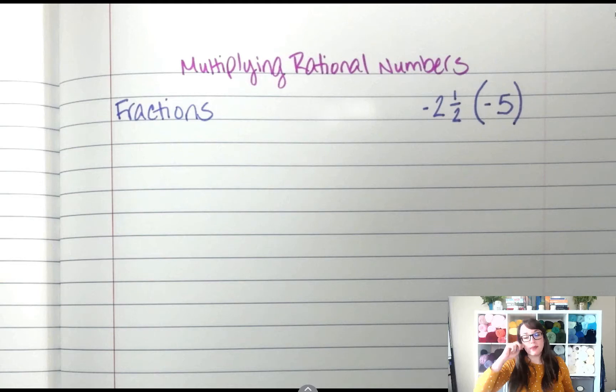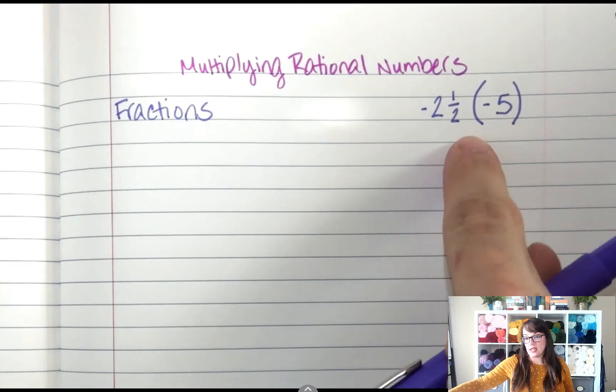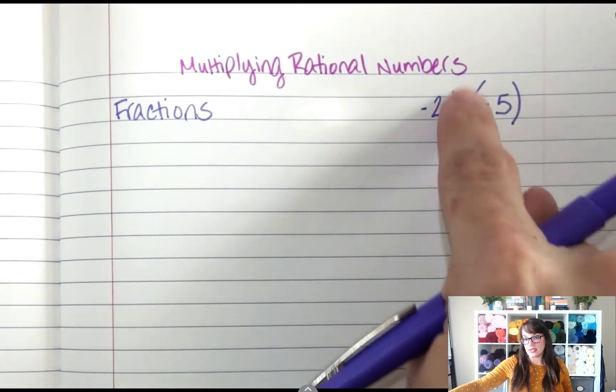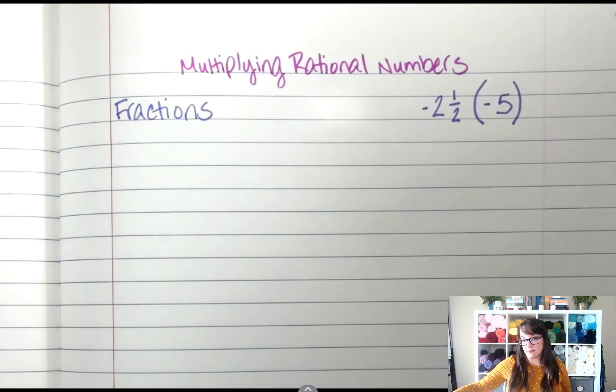Now something to keep in mind. There are lots of different ways to show multiplication. We can use the little x. We can use a dot. We can leave no sign at all, which means multiply. So when it's touching the parentheses like that, when there's no sign, that means multiply.